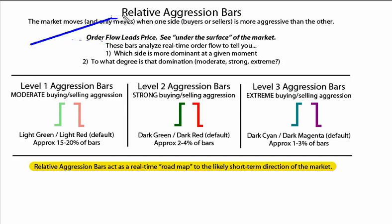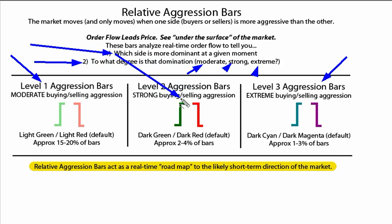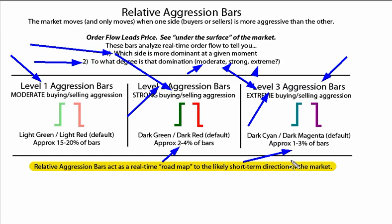These real-time relative aggression bars help us do two things: number one, determine which side — buyers or sellers — is more dominant at a given moment; and number two, determine to what degree that domination is occurring — is it moderate, strong, or extreme? We have three levels: level one, which is moderate; level two, which indicates strong buying or selling; and level three, which is extreme. We really want to watch levels two and three, because they don't happen very often, and when they do, something meaningful is going on.